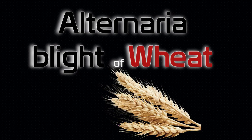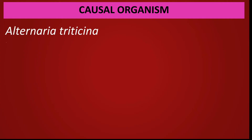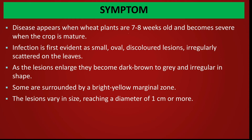Now let us look at alternaria blight of wheat. The disease is caused by the fungus Alternaria triticina. The disease appears when wheat plants are 7–8 weeks old and becomes severe when the crop is mature, as Alternaria is a weak pathogen.